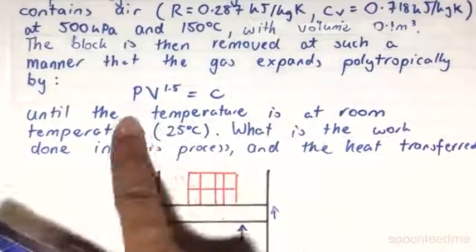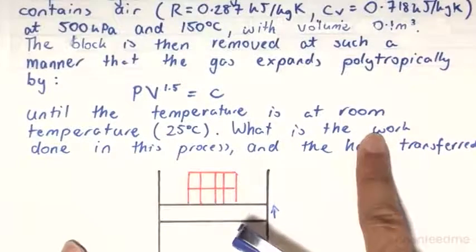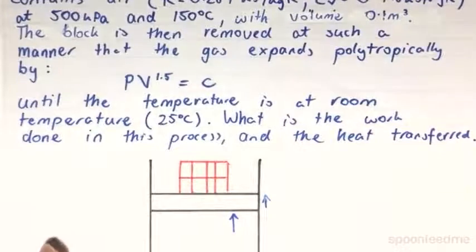This gas expands polytropically until the temperature is at room temperature, so that's 25 degrees Celsius. So what is the work done in this process and the heat transferred?